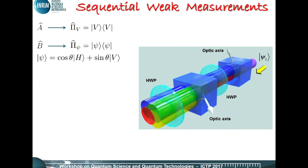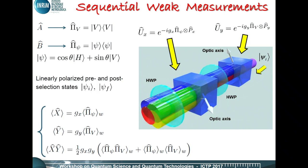Our setup was something like this. We have an initial state psi entering the experiment. Here we have the first weak interaction, and here we have a projection on a vertical polarization state. After that, the photons enter into the second block of measurement — again a weak measurement, operated in order to have a projection on direction psi, again linearly polarized.